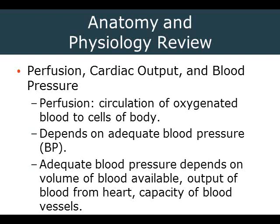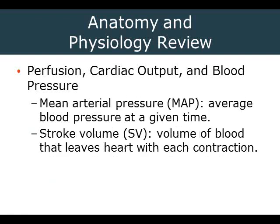Cardiac output equals stroke volume times heart rate. Stroke volume is how much blood is ejected with each contraction. If the heart ejects 60 mL per contraction beating 60 times per minute, cardiac output is 3,600 mL — or 3.6 liters per minute. This is also known as the cardiac minute volume.